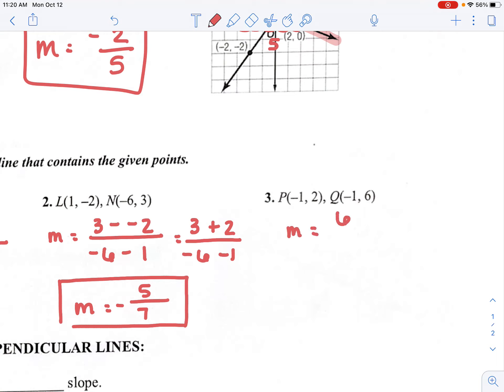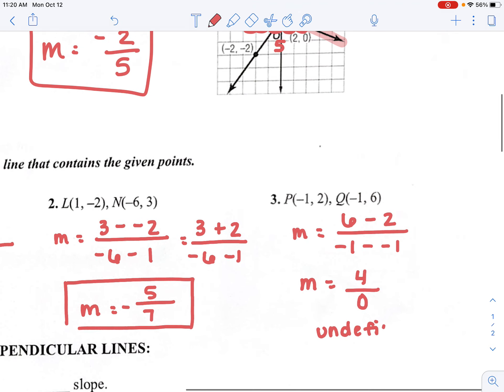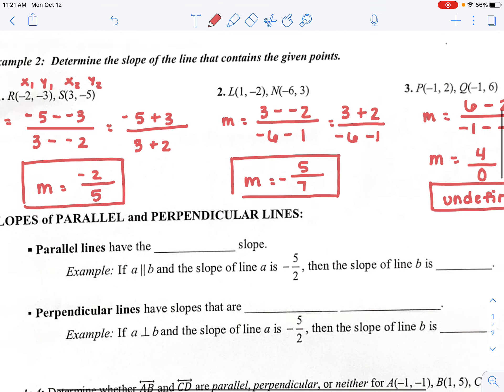One last one here. So I've got y2, which is 6 minus 2, over negative 1 minus a negative 1. I have slope equals 6 minus 2 is 4. Negative 1 minus a negative 1. That would become negative 1 plus 1. Negative 1 plus 1 would be 0. And here's our issue. Can you divide by 0? No. So we would actually call the slope undefined.